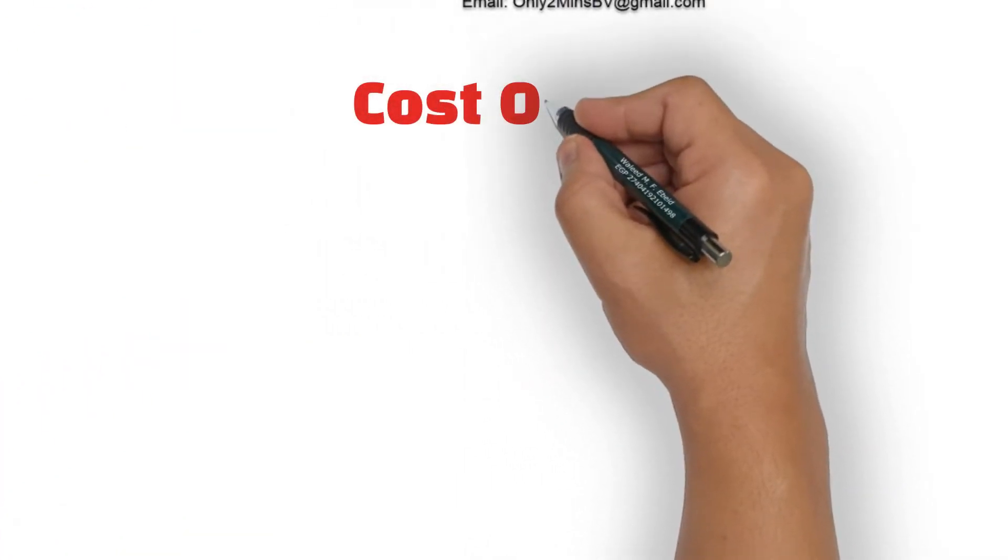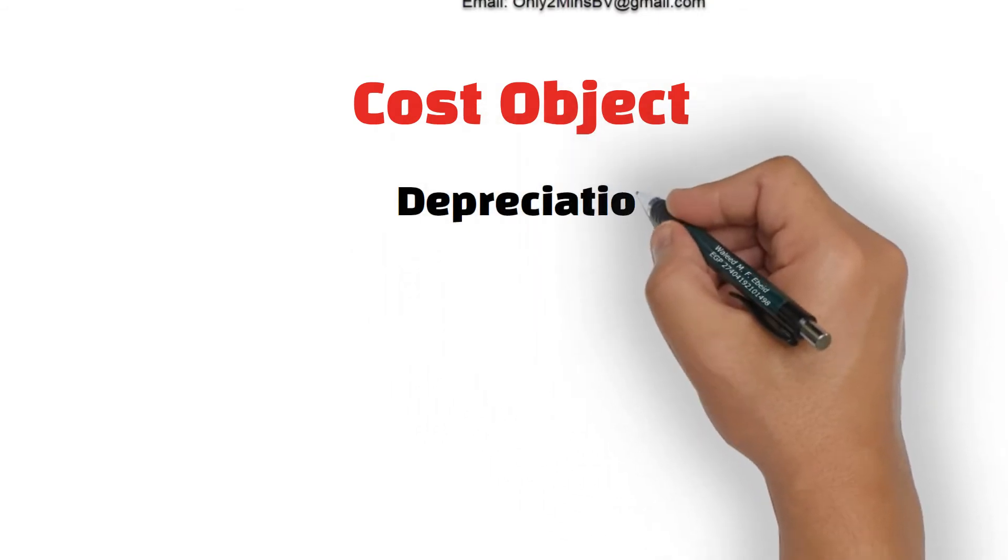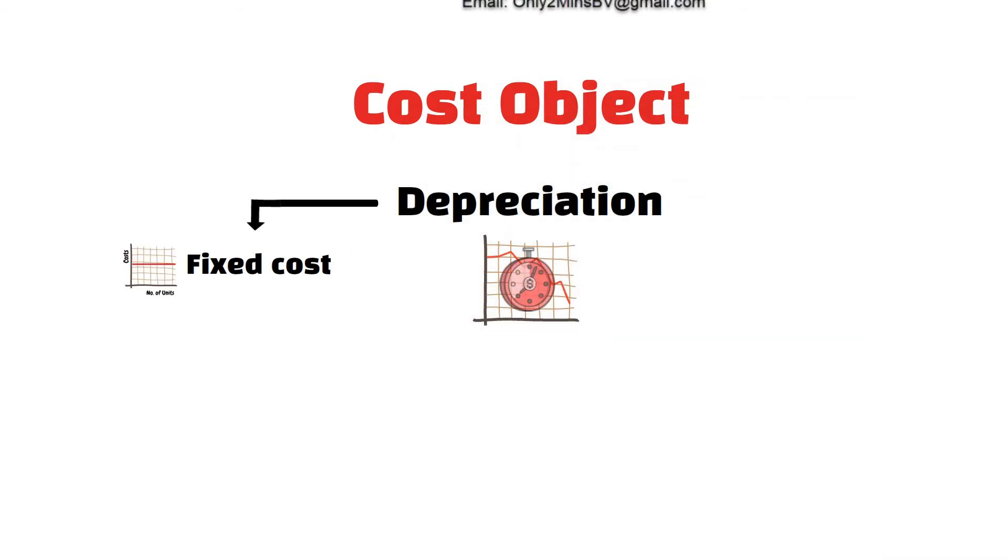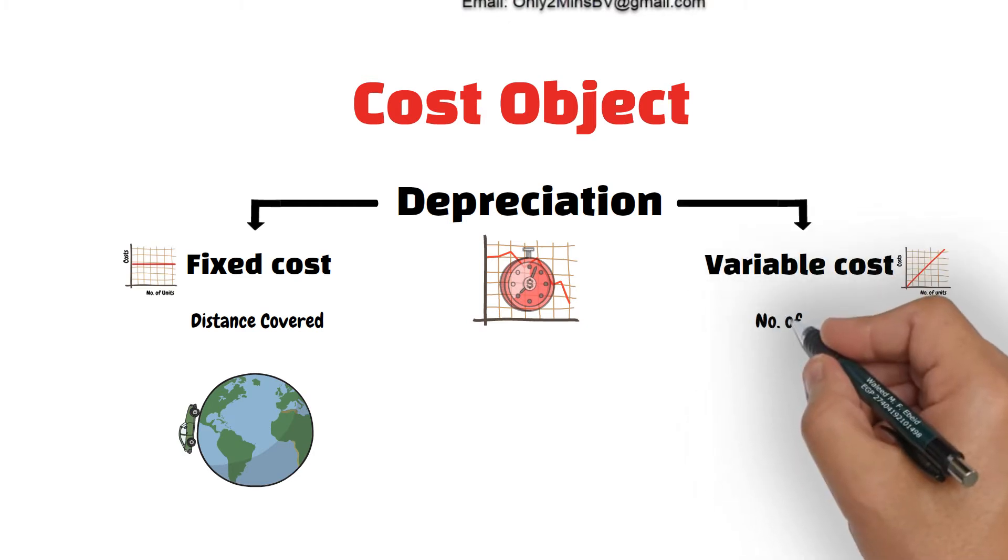Second, the cost object. The depreciation expense for a car is a fixed cost regardless of the distance covered by this car and is a variable cost if more cars are added.